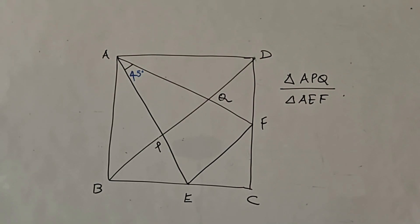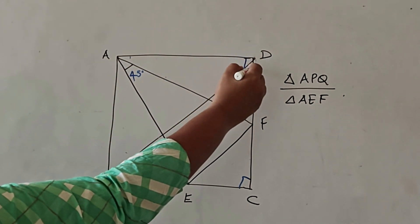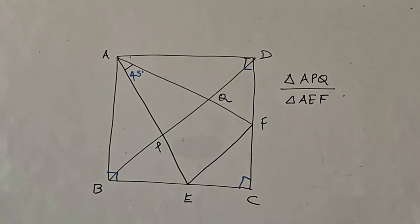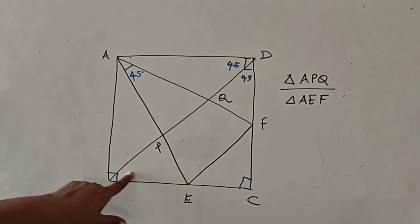The first step I asked them to do was to mark all the angles which were possible to be marked in the given diagram. Easily each of the corner angles could be marked as 90 degrees because it is a square. The diagonal of a square divides the vertices into two equal angles, thus making each of these angles 45 degrees, and here also 45-45 each.